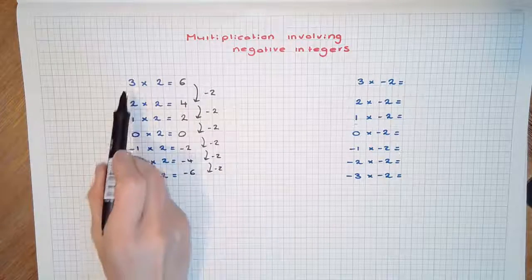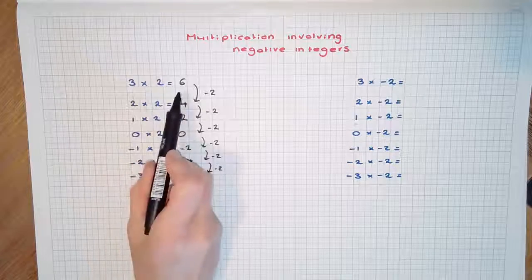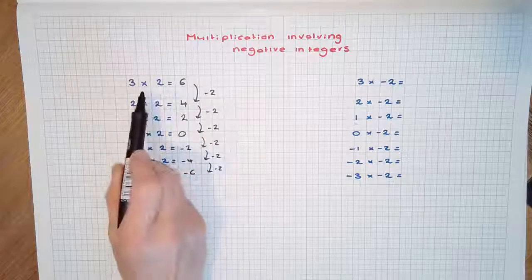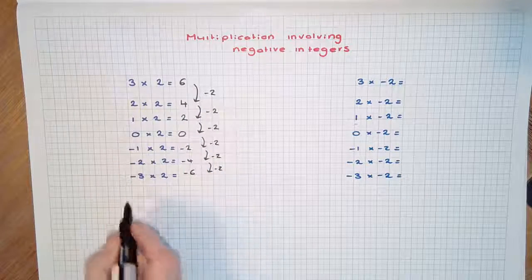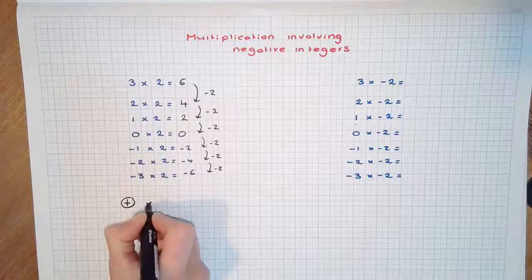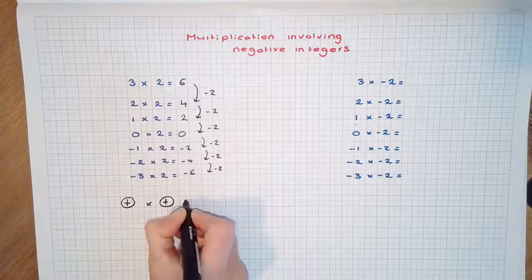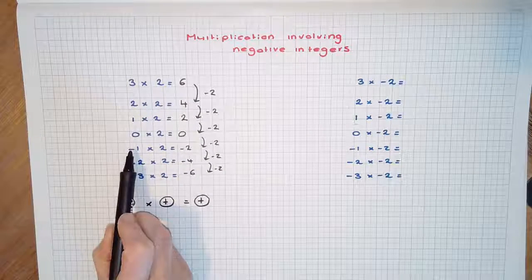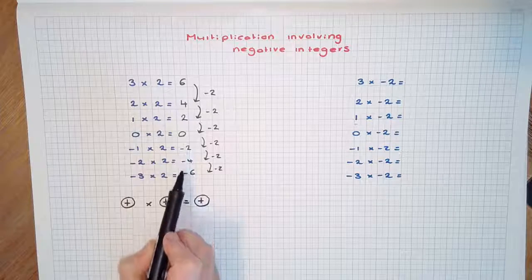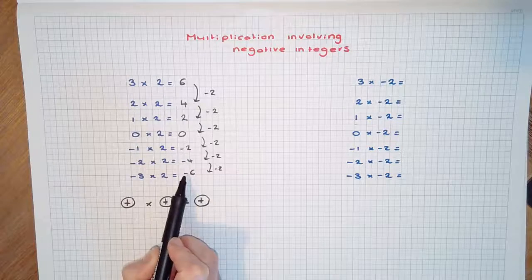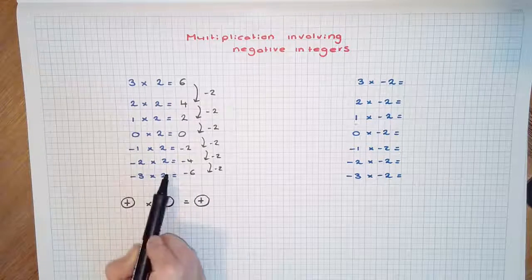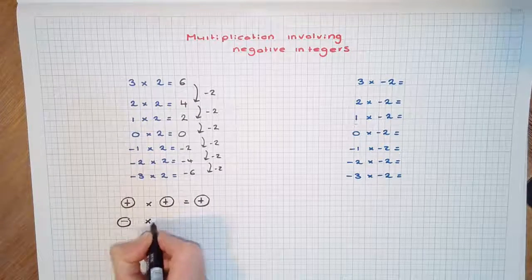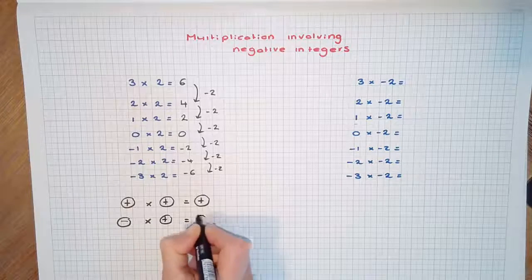Looking at this pattern, we can see that a positive number times a positive number results in a positive answer — that is, the product of two positive numbers is positive. We can write: a positive times a positive gives a positive answer. But note that a negative number times a positive number results in negative answers — that is, the product of a negative and a positive is a negative. So we can write the rule: a negative times a positive is a negative.